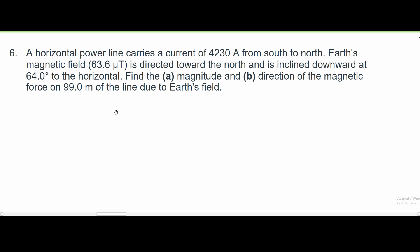For number six, a horizontal power line carries a current of 4,230 amps from south to north. Earth's magnetic field is 63.6 microteslas and is directed towards the north and is inclined downwards at 64.0 degrees to the horizontal. We're asked to find the magnitude first. So we're going to write down everything that we have. We have a current that is 4,230 amps, and this goes from south to north.